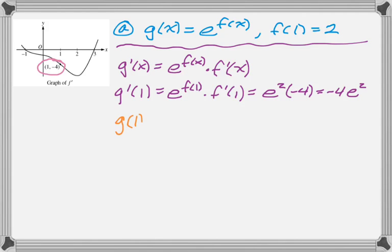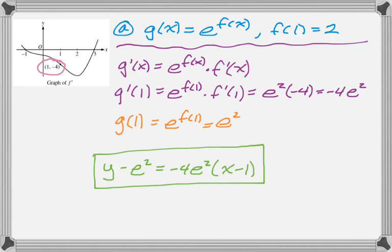So that's negative 4e squared. g(1) is just e of f(1), e to the f(1), which is e squared, and then tangent line. So point slope form on this one, I guess you could simplify it, but I don't know why you would.